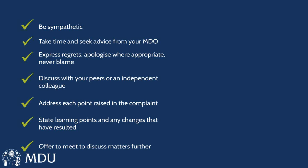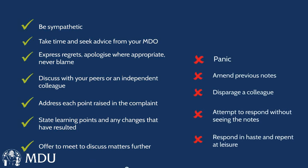If the complaint is escalated to the Ombudsman, the Ombudsman might also take into account whether issues that arose have been remedied and dealt with. An offer to meet to discuss things further can sometimes be helpful — not always appropriate, and complainants don't always want that — but when written correspondence seems to be at cross purposes and you're risking a chain of letters where both sides aren't quite understanding each other's perspective, a meeting can be a really good way of dealing with that.